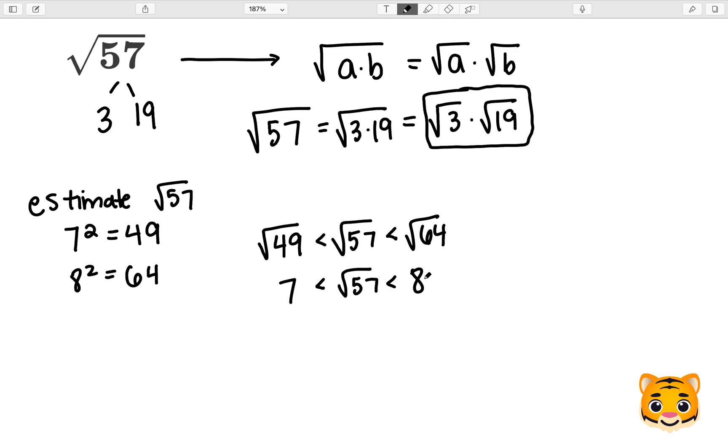In order to find what whole number we can round the square root of 57 to, we need to find what value is closer to 57, either 49 or 64. 57 minus 49 gives us 8, while 64 minus 57 gives us 7. Because 64 is closer to 57, the square root of 57 is going to be estimated to around 8.